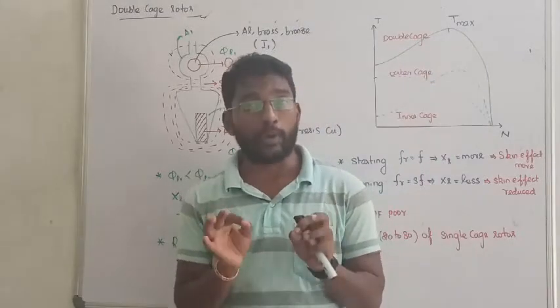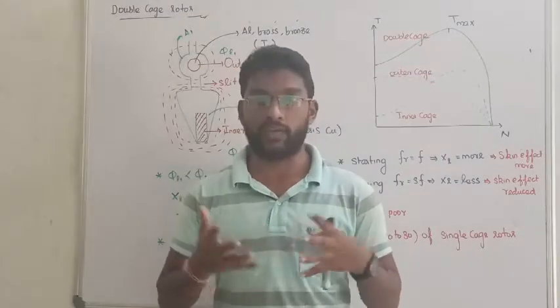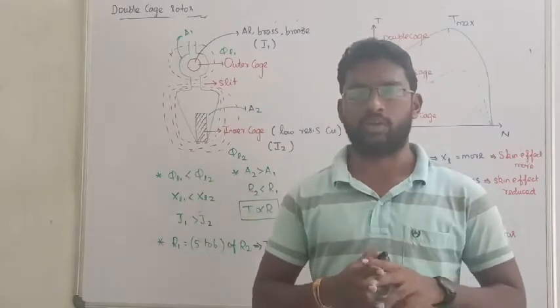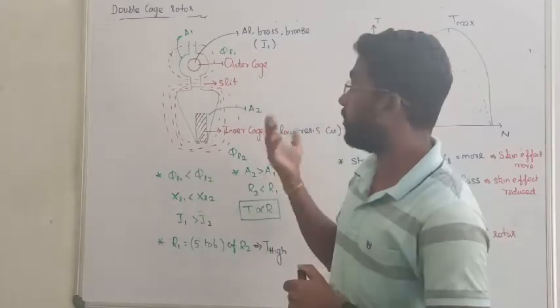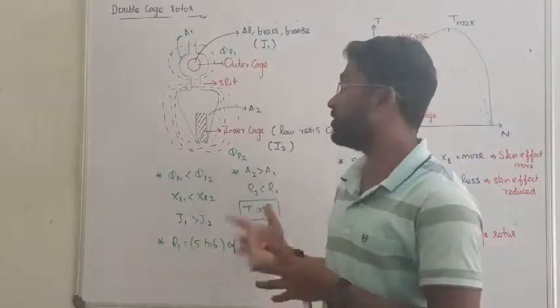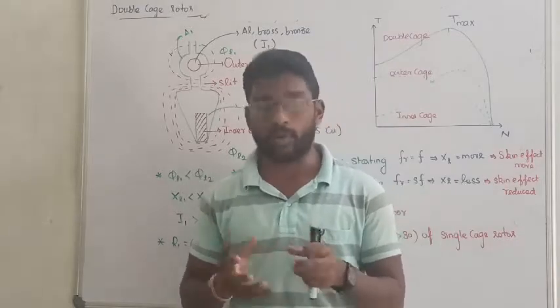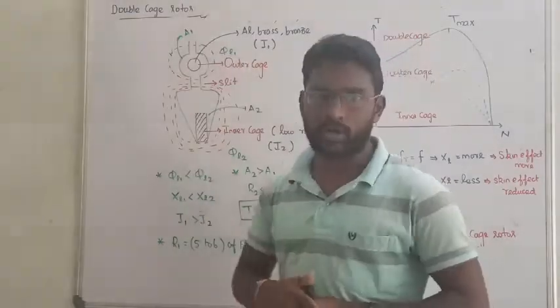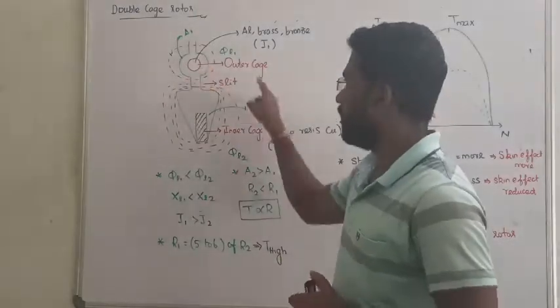Like I said in memory, slip ring induction motor has good starting torque, but the problem with the squirrel cage induction motor is starting torque is very low. So we are going with a modified structure.